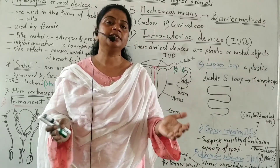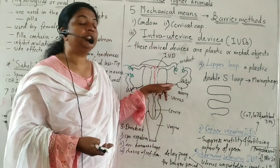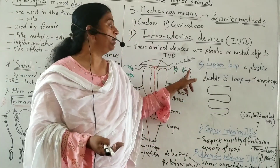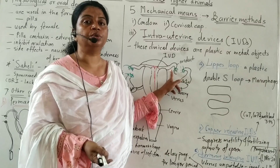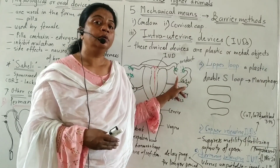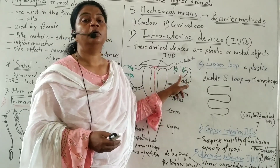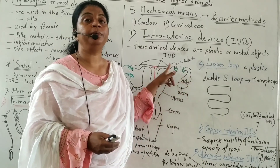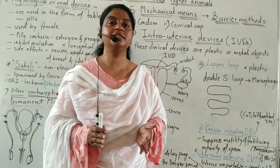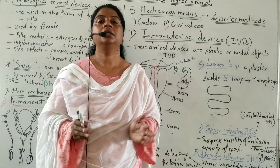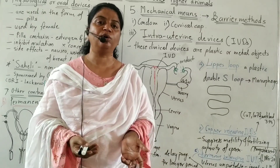However, with advances in medical science, these operations are now reversible. The cut fallopian tubes or vas deferens can be rejoined through a re-operation, restoring the original function. These are the birth control methods by which we can overcome the problem of population growth.